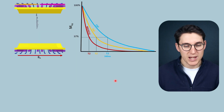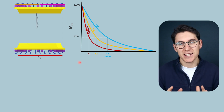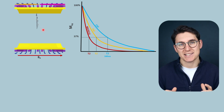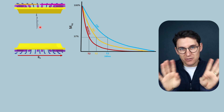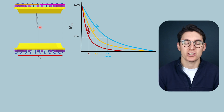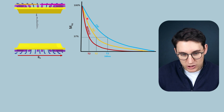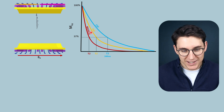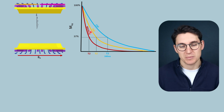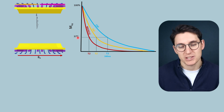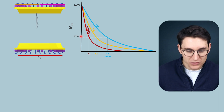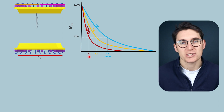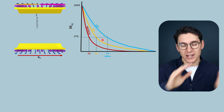To review: there are two separate relaxation processes happening simultaneously but independent from one another. The first is transverse decay, or T2 relaxation — spin-spin relaxation — where protons are dephasing and we're losing the net transverse magnetization vector. That loss occurs at different rates for different tissues, and those differences in rates account for T2 contrast. Loss of 63% of that transverse signal defines the T2 time constant, which differs for each tissue.